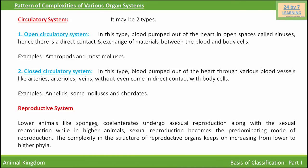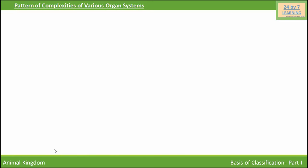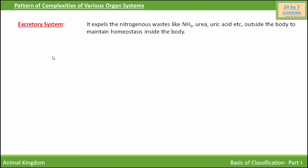Next is the reproductive system. Lower animals like sponges and coelenterates undergo asexual reproduction along with sexual reproduction, while in higher animals sexual reproduction becomes the predominating mode of reproduction. The complexity in the structure of reproductive organs keeps on increasing from lower to higher phyla.